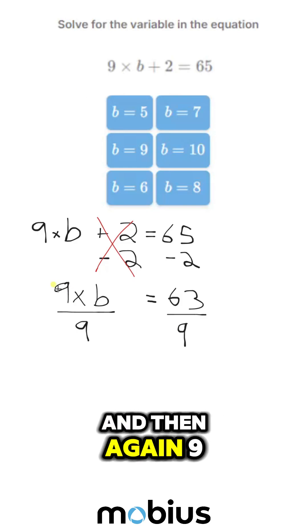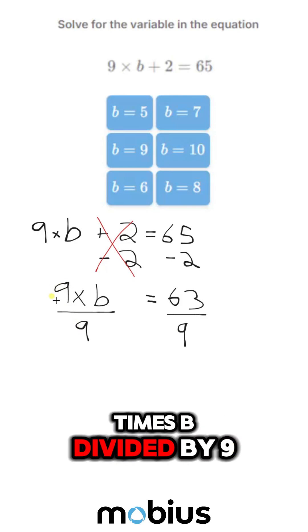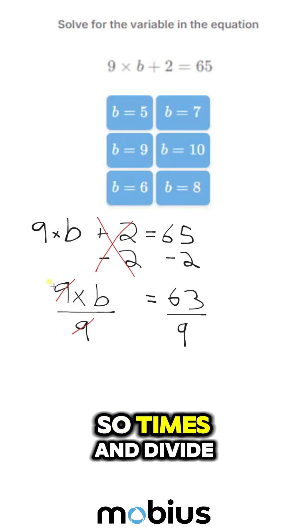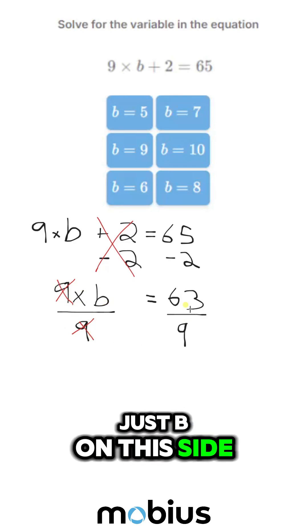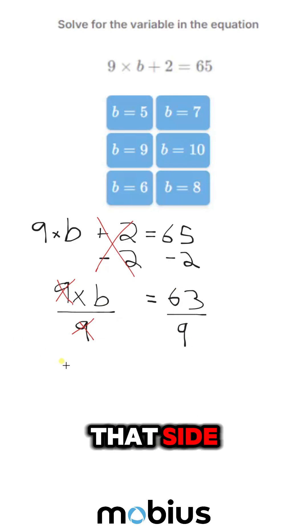And then again, 9 times b divided by 9. So times and divide, cancel out. And we're left with just b on this side. And 63 divided by 9 on that side.